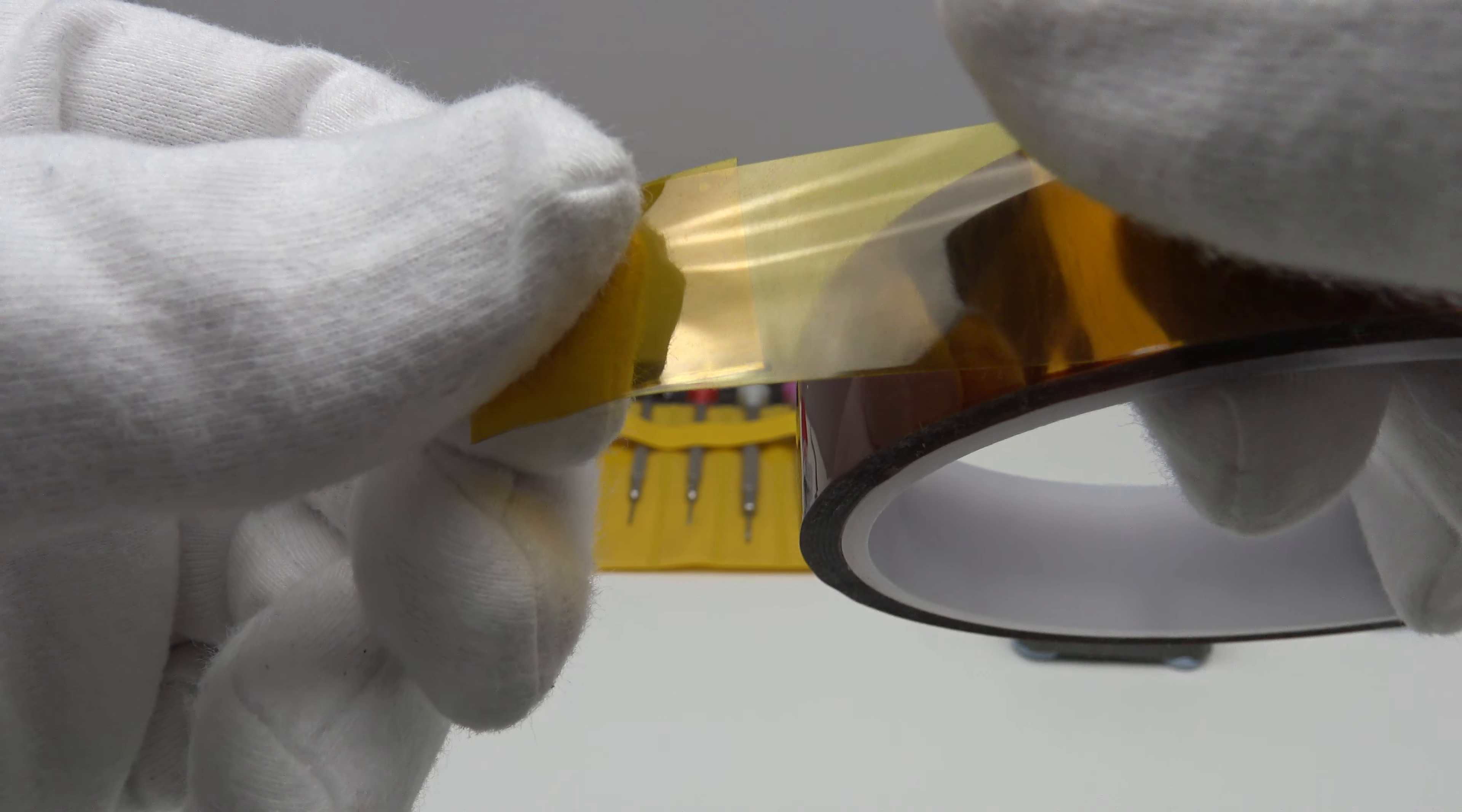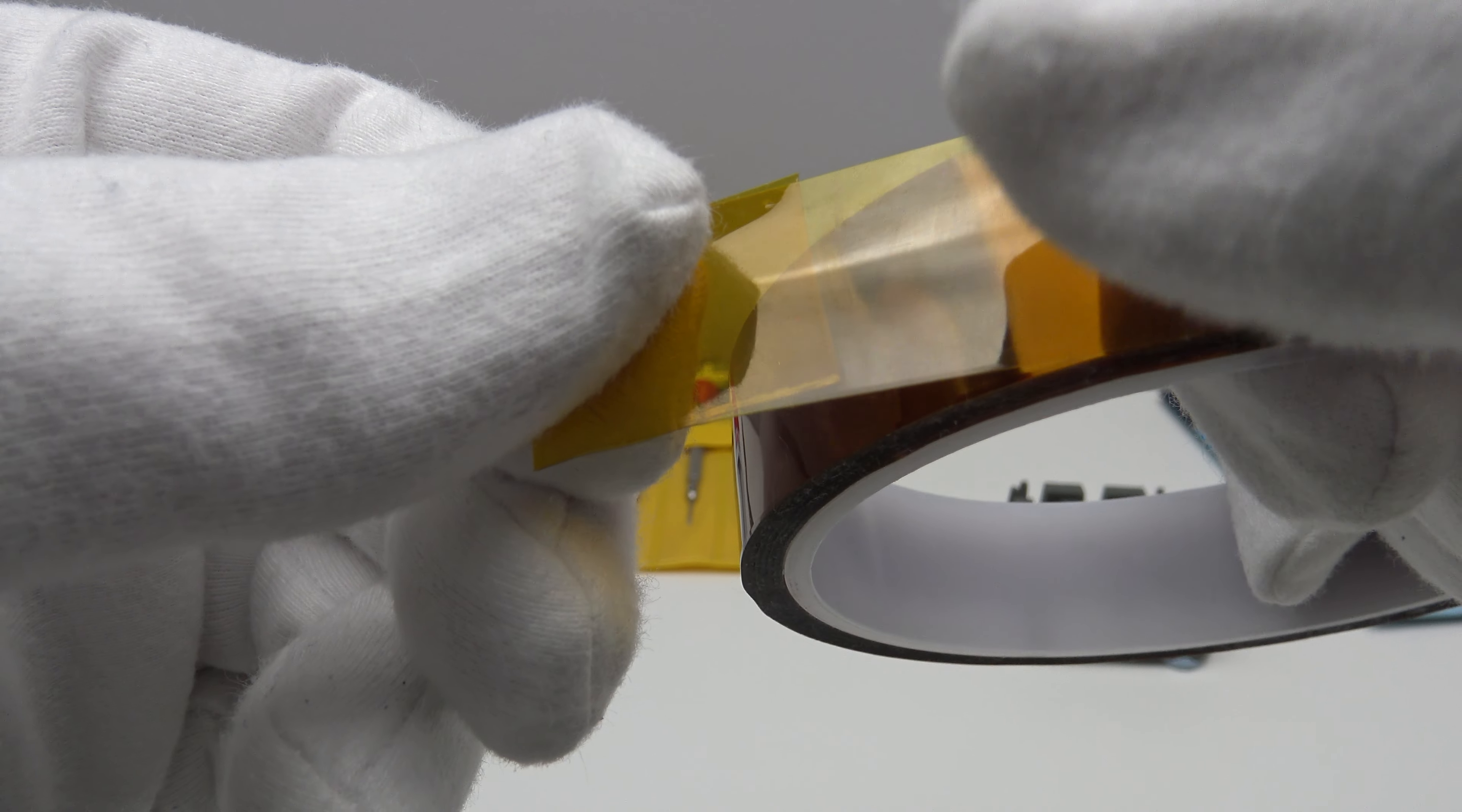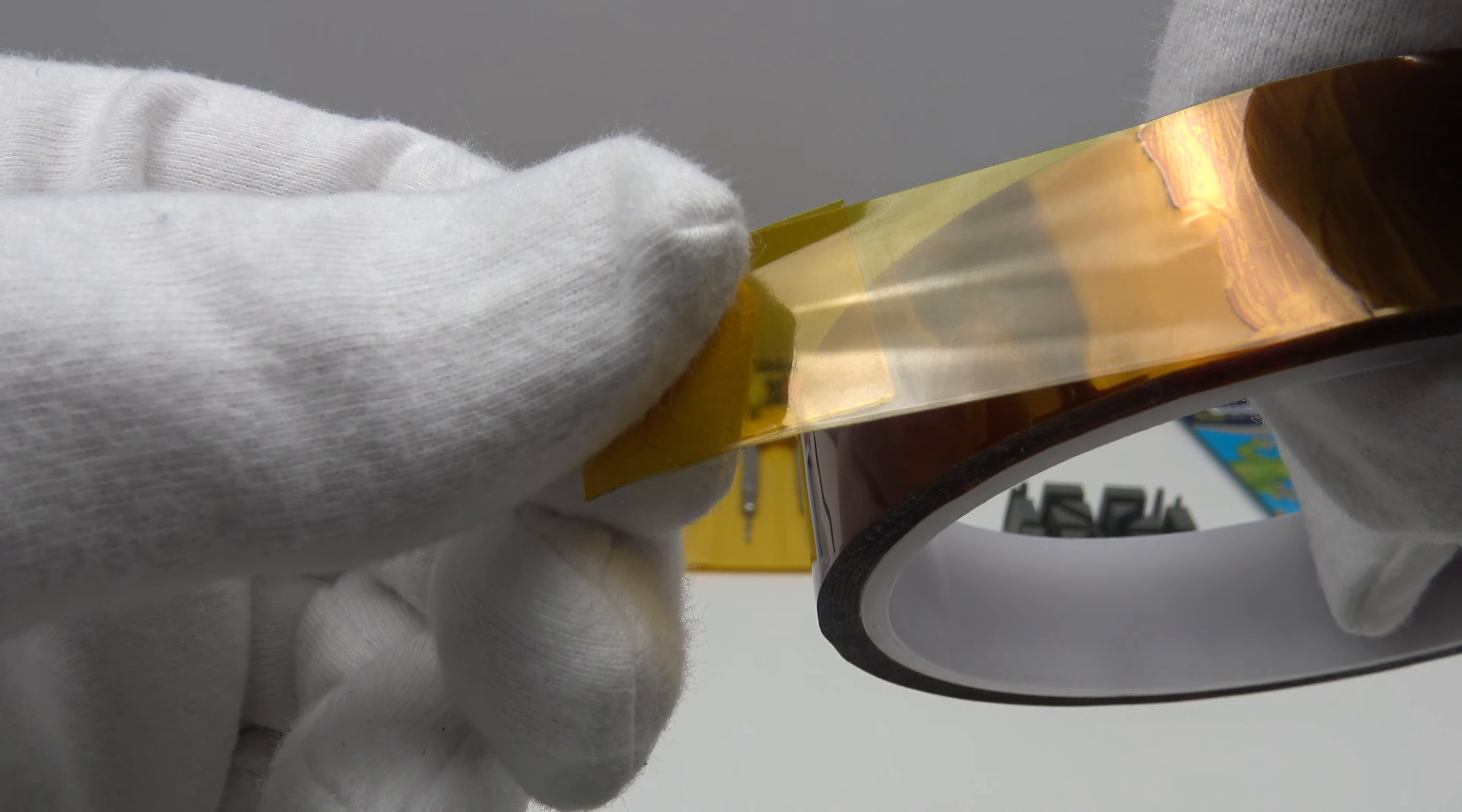The other thing it does is it protects the bracelet links from scuffs and scratches. So, for example, if you slip with a screwdriver tip, you're not going to scuff or scratch the screw head or the bracelet link.